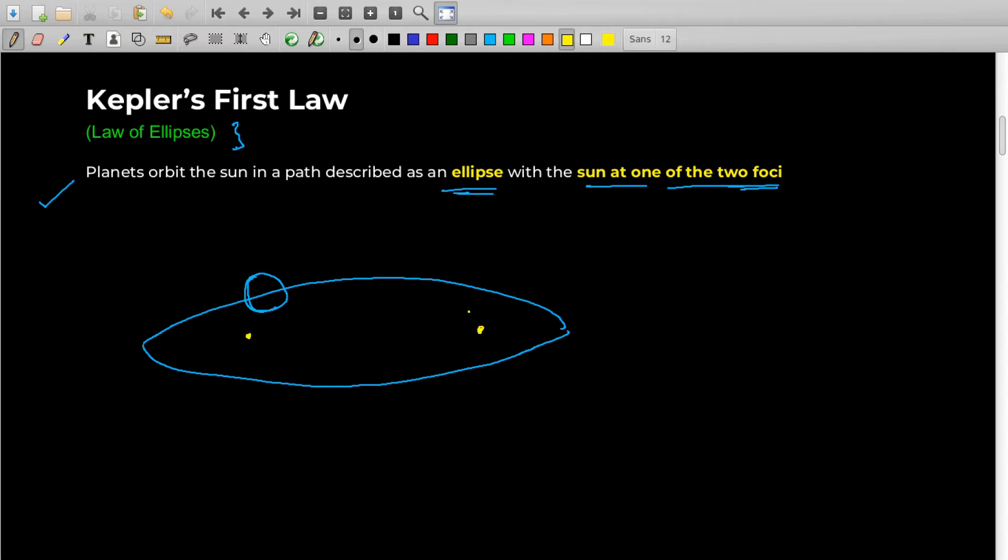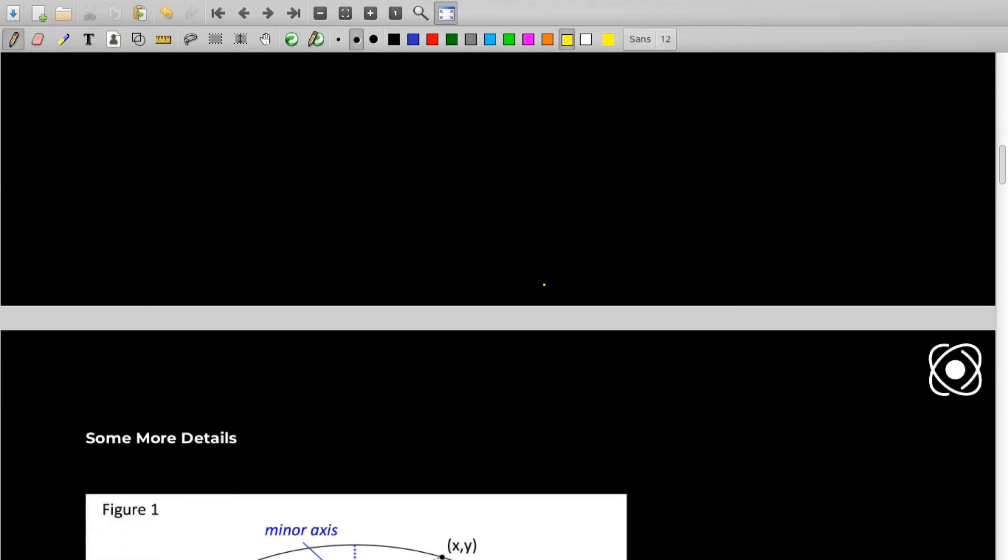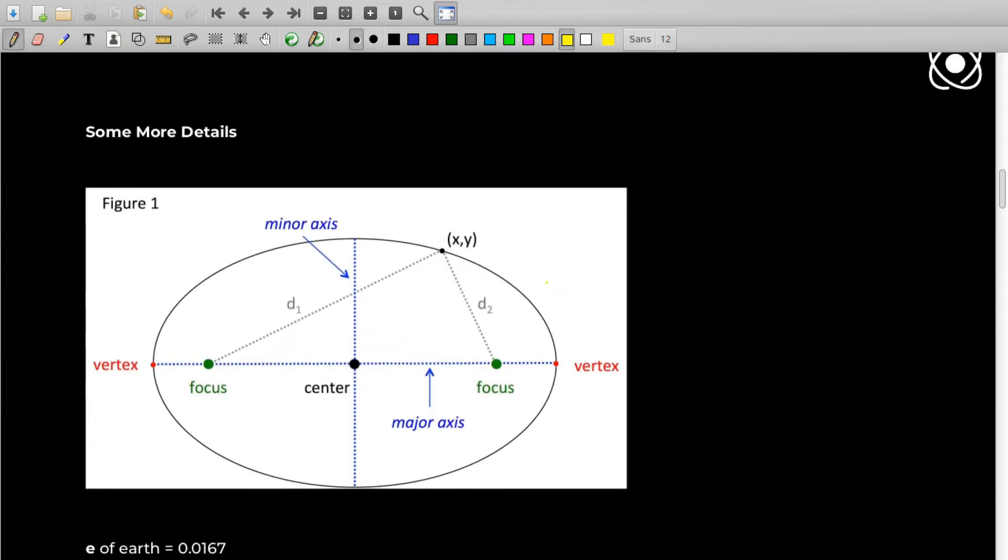So ellipse looks somewhat like this. If you take a planet in this orbit, then the Sun is located either at this point or at this point. So these two are basically called the foci of an ellipse.